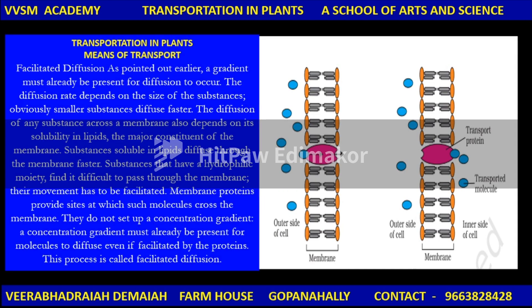In facilitated diffusion, a concentration gradient must already be present for diffusion to occur. The diffusion rate depends on the size of the substances — smaller substances diffuse faster. Diffusion across the membrane also depends on the substance's solubility in lipids, the major constraint of the membrane. Proteins do not set up a concentration gradient; a gradient must already be present for molecules to diffuse even if facilitated by proteins. This process is called facilitated diffusion.